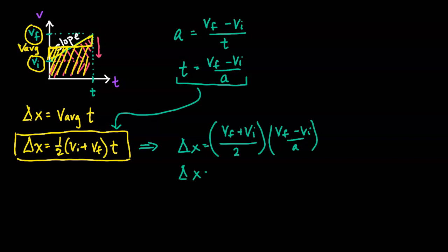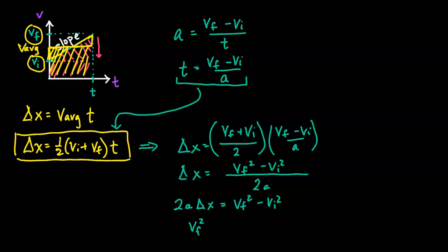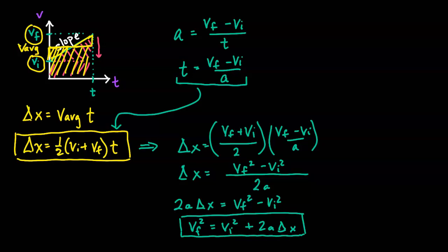Multiplying that out using FOIL, we get VF squared minus VI squared on top and 2A on the bottom. Multiplying both sides by 2A: 2A·delta X equals VF squared minus VI squared. Solving for VF: VF squared equals VI squared plus 2A·delta X. In the next video I will show you how to create a chart to figure out which of these equations to use when solving kinematic problems.